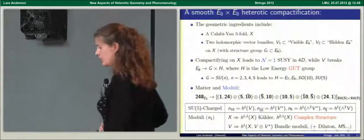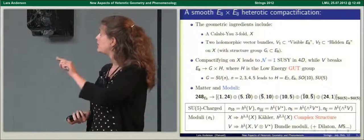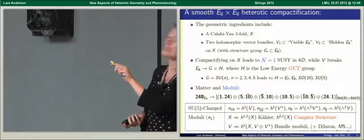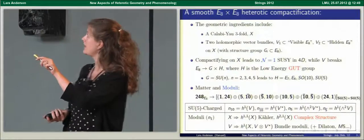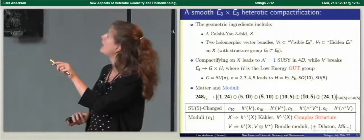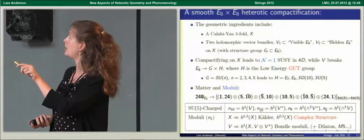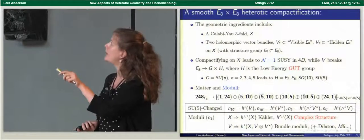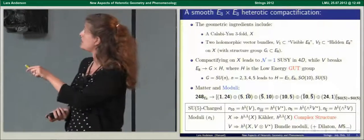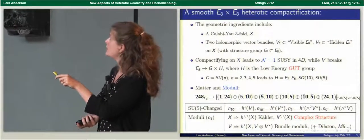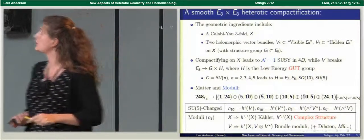The arena for today's talk will be the smooth E8 × E8 heterotic string in 10 dimensions. To produce a 4D effective theory, I need to reduce my Yang-Mills coupled to gravity in 10 dimensions down to a Yang-Mills supergravity theory in 4 dimensions. I do this by compactifying on a compact Calabi-Yau 3-fold. I also break the E8 symmetry down to something smaller by introducing gauge field VEVs in the hidden dimensions.